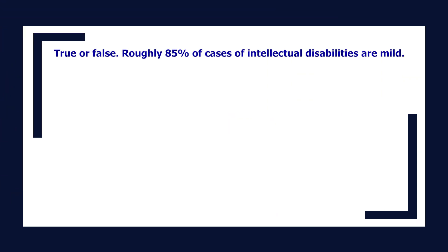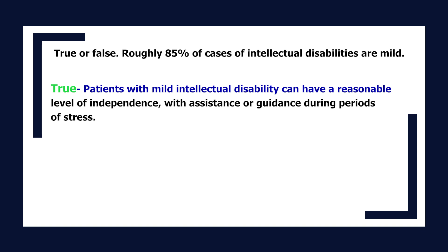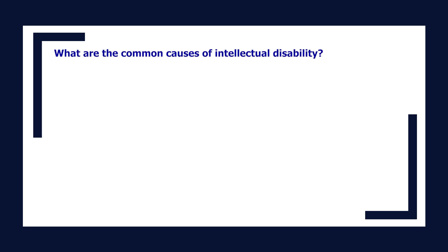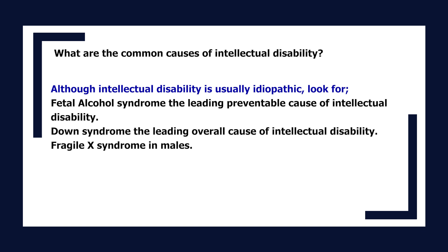True or false: roughly 85% of cases of intellectual disabilities are mild. True — patients with mild intellectual disability can have a reasonable level of independence with assistance during periods of stress. Common causes include fetal alcohol syndrome (the leading preventable cause), Down syndrome (the leading overall cause), and Fragile X syndrome in males.